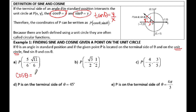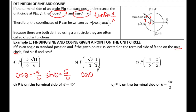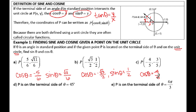For the example problems where points are given on the unit circle: cosine of theta is your x-coordinate, and sine of theta is your y-coordinate. This applies the same way for each example — wherever the point is given, just read off the x for cosine and the y for sine.